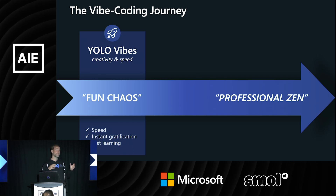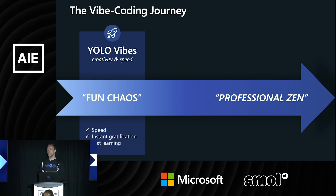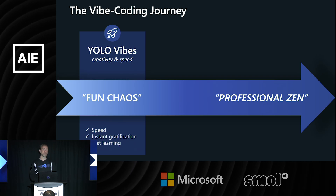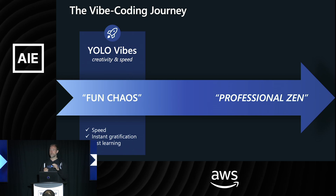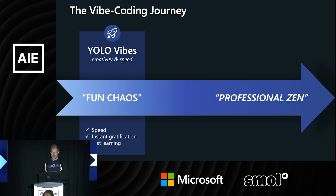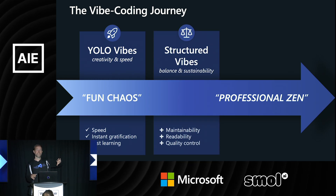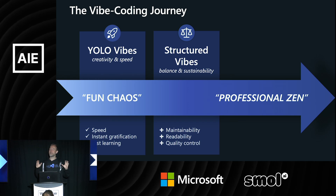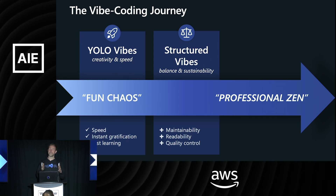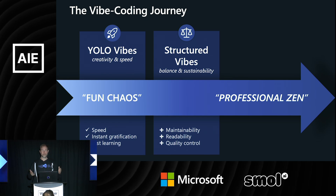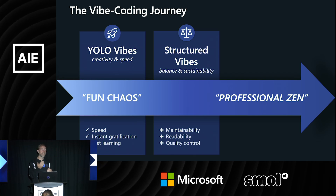To break it down: this initial vibe coding — what you see most people do on YouTube, working on websites, shipping them to production and then wondering why everything is slowly falling apart and their bills go up — that's Yolo vibe coding, not meant to ship to production. It's about speed, instant gratification, and creativity. Then structured vibes brings guardrails. If you have an LLM in this first space it will just do creative things. Guardrails help enter the state of maintainability and bring more sustainable code in the end.